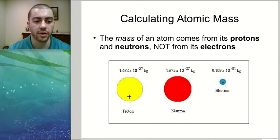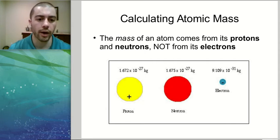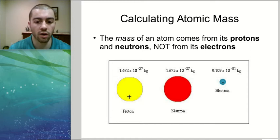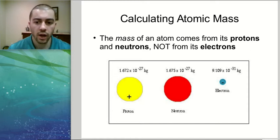So we've talked about the structure of an atom. Now we're going to talk about how to calculate the mass and charge of an atom given the number of protons, neutrons, and electrons that it has.